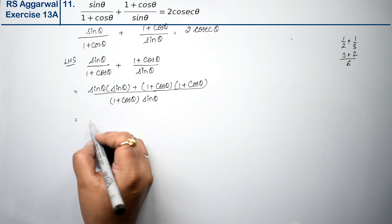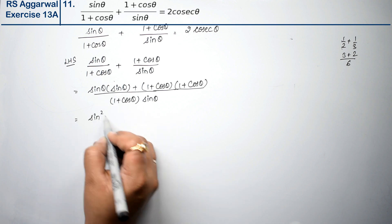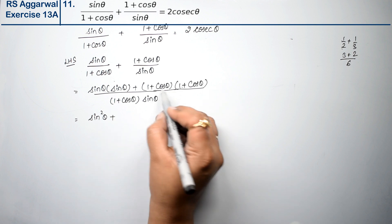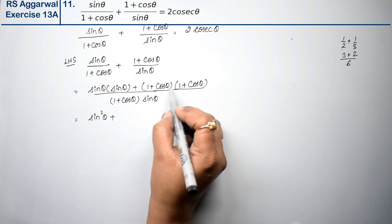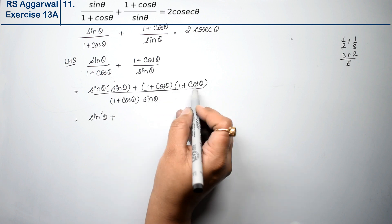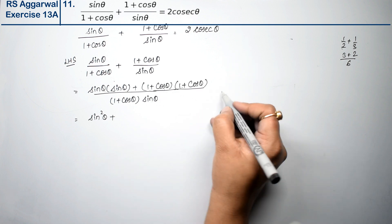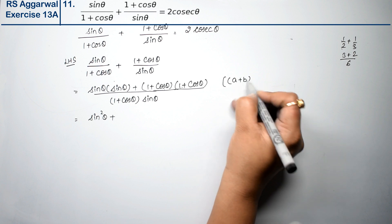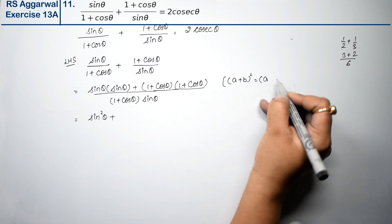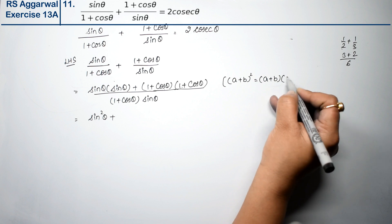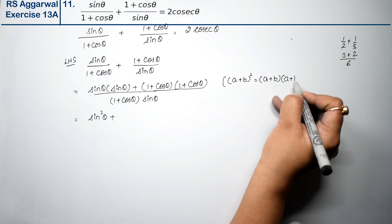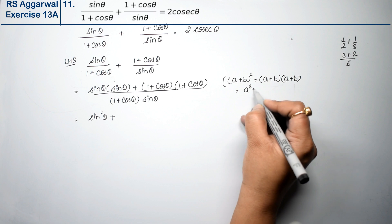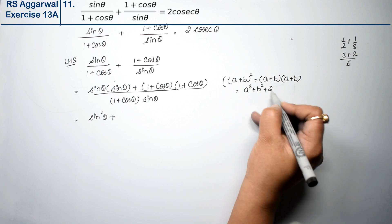So the numerator becomes: sin squared theta, plus the expansion of (1 plus cos theta) squared. Now, when you see two identical brackets multiplied, we use the formula: (a plus b) into (a plus b) equals a squared plus b squared plus 2ab. Here, a is 1 and b is cos theta.